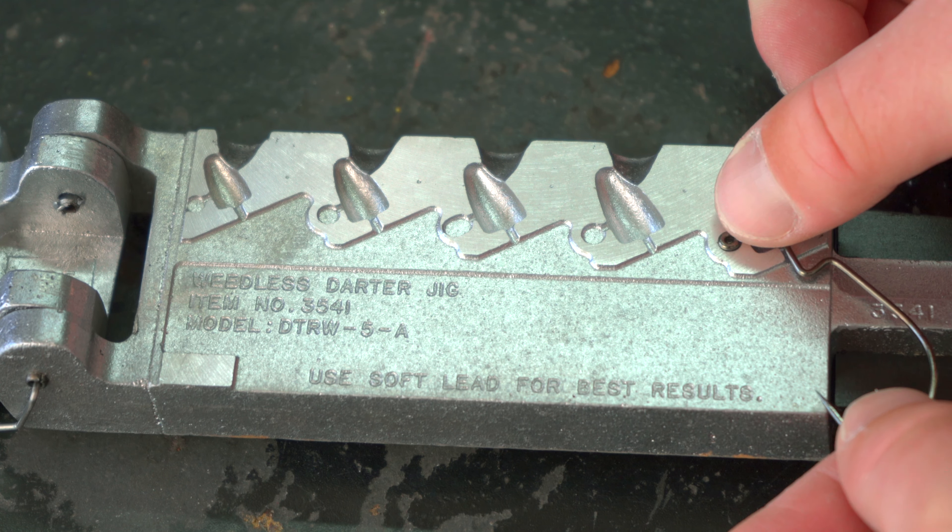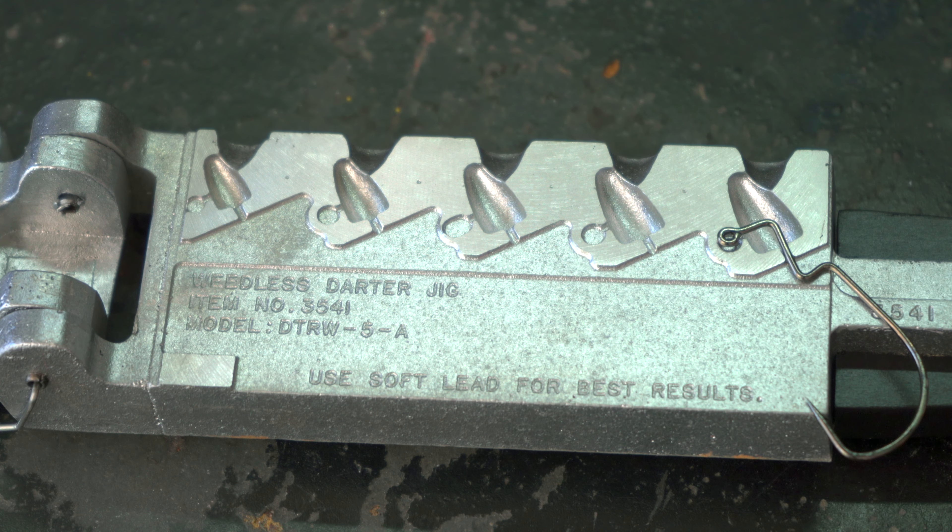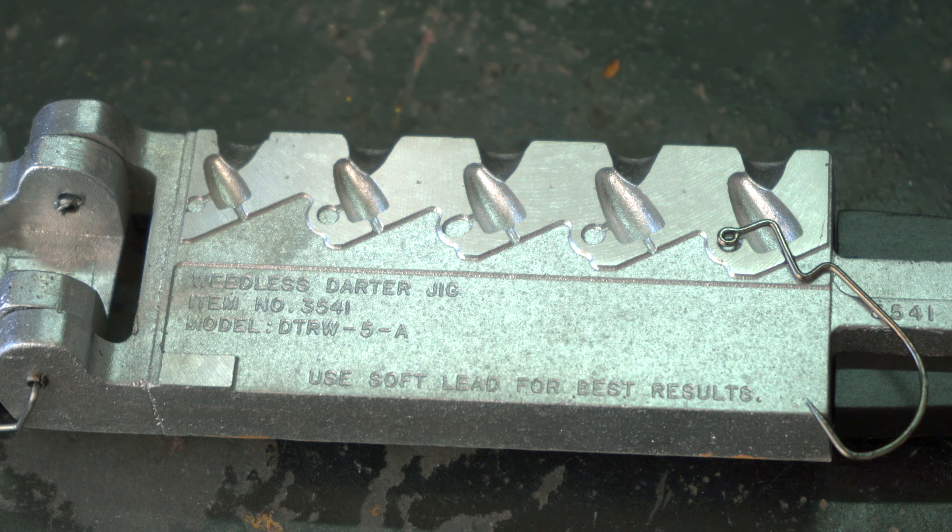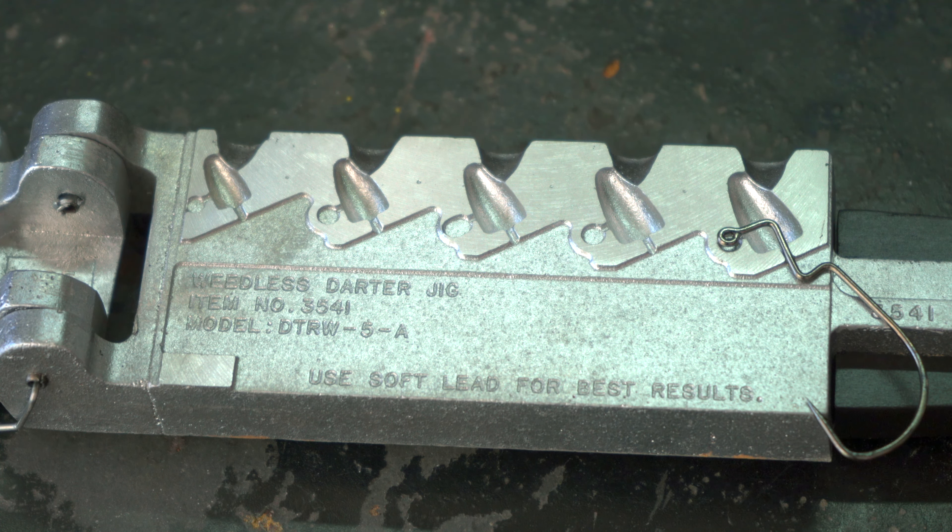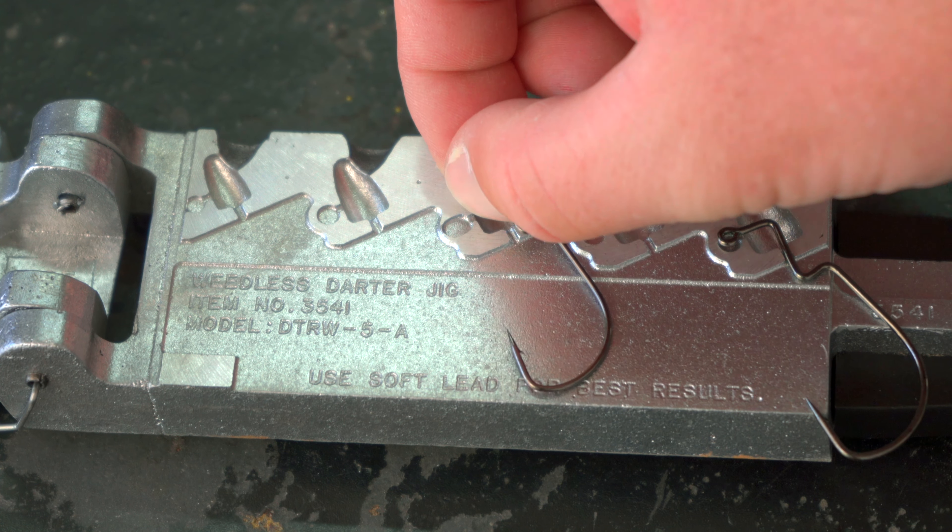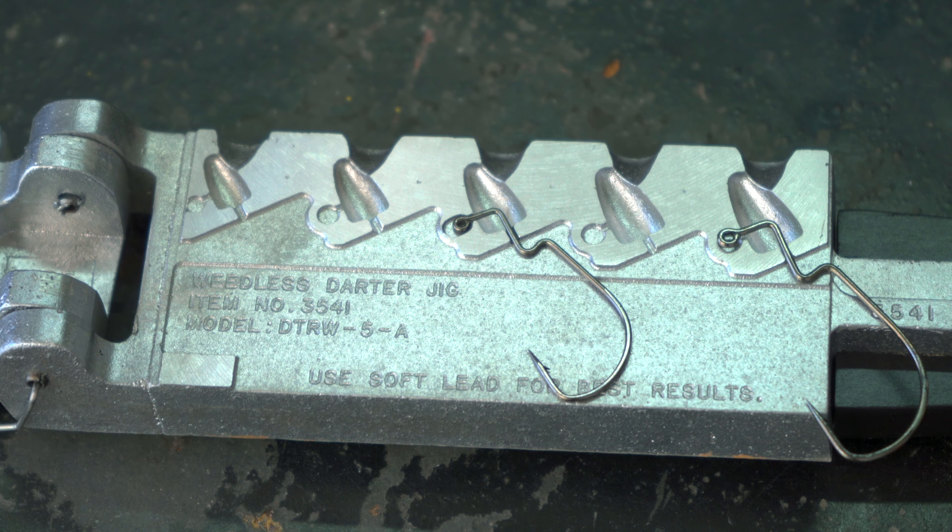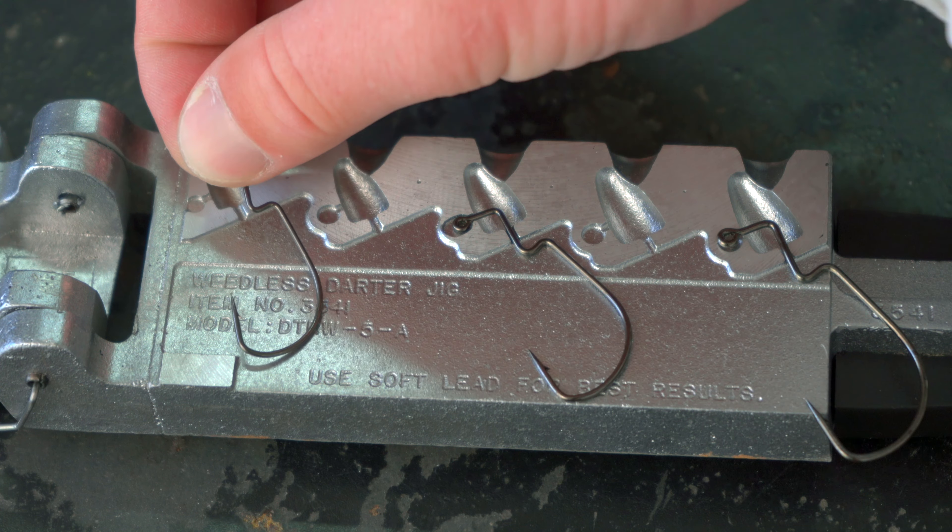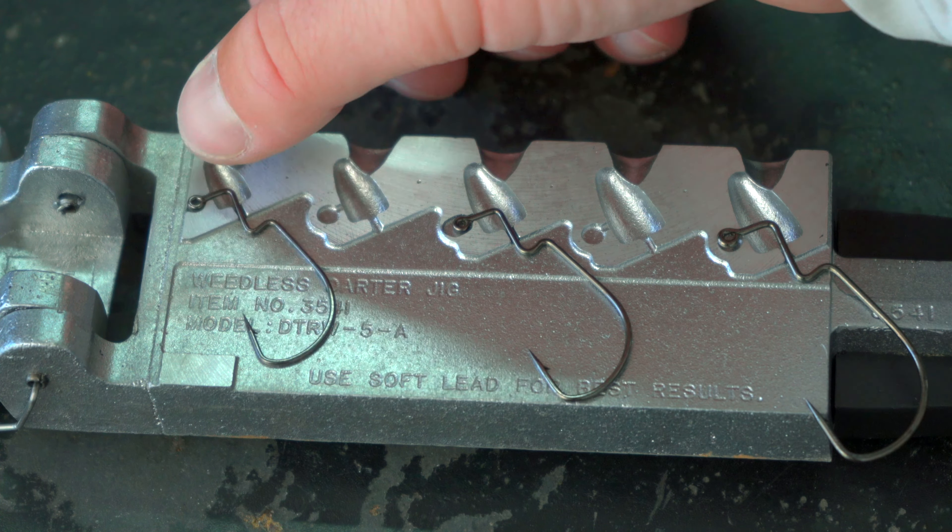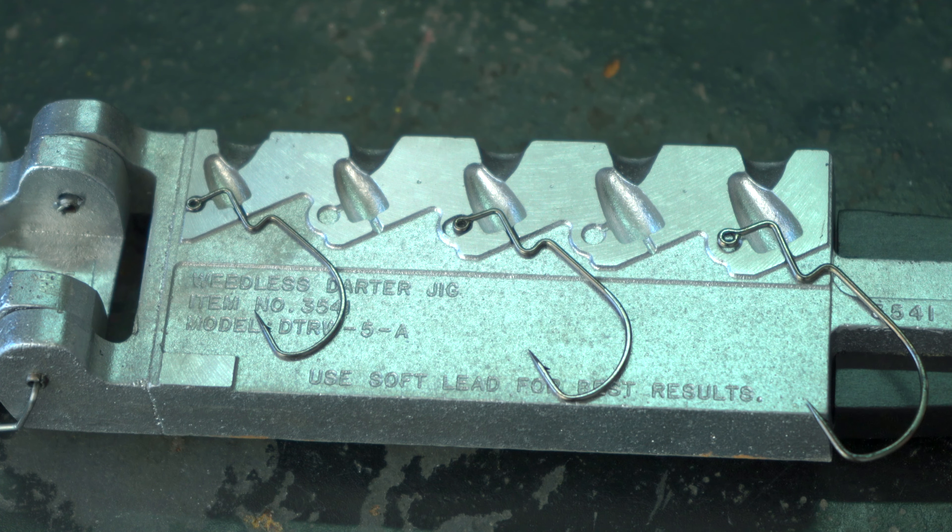One great thing about this mold is that it doesn't take a lot of components. Literally, you just got to put a hook in there and then you're ready to go. I'm going to make the three-eighth, the quarter and the one-eighth. I have the four-aught hook inside of that three-eighth ounce size right now. The next hook going into the one-quarter ounce is going to be the two-aught and then we're going to put the one-aught size in the one-eighth and it fits really well.